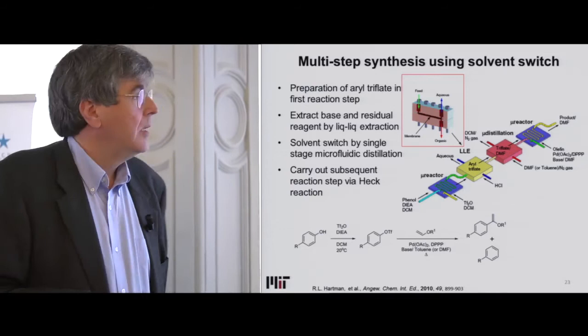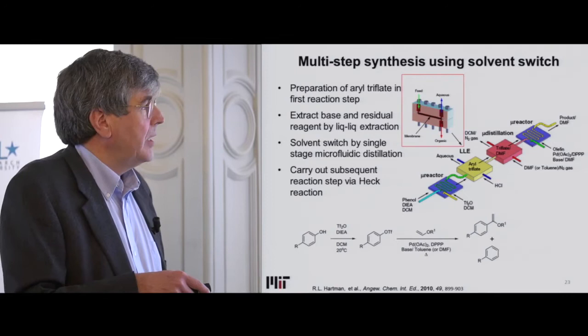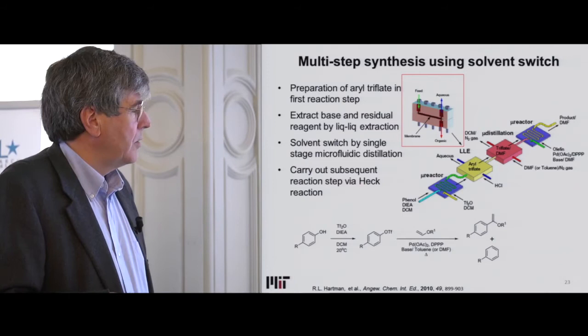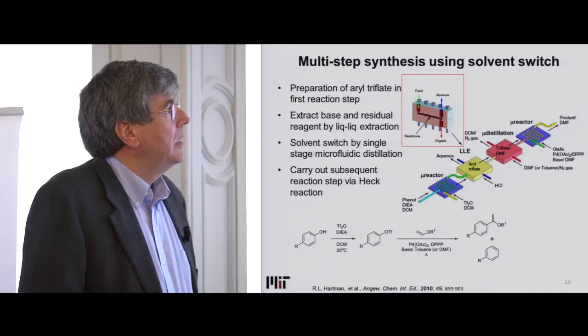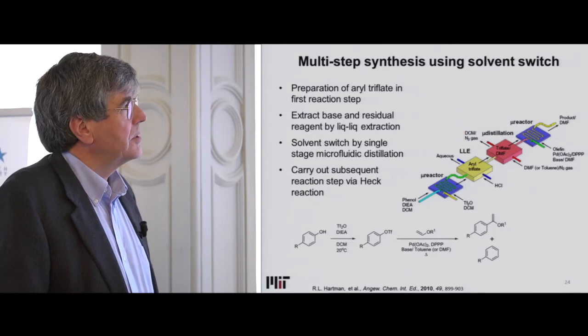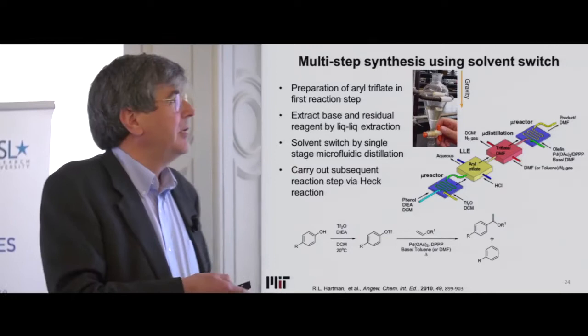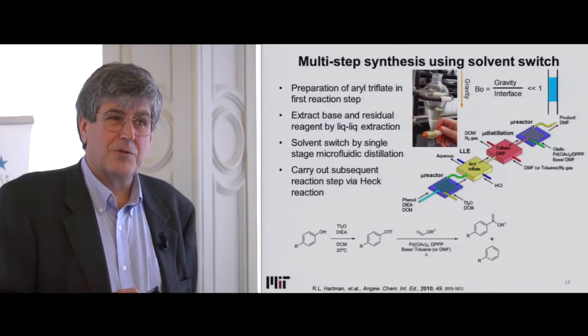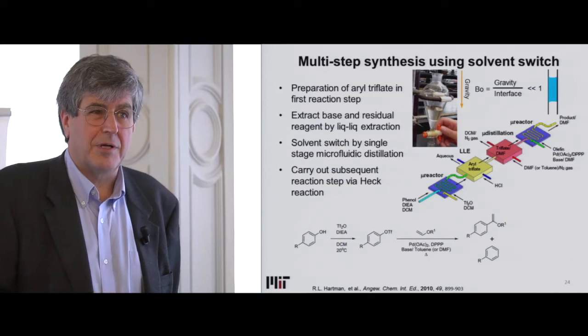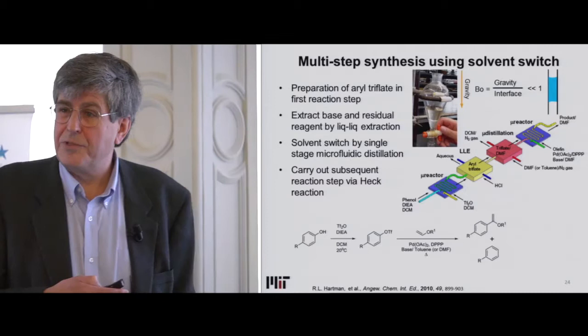The first step: we do the first reaction in the first micro-reactor. This has an amine and dichloromethane in it. I first want to get rid of the amine by washing with a weak acid to neutralize it and take the amine out. So I have to do an extraction process. The way you do this in the lab is you put it in a funnel, shake it, and let gravity settle it. But at microfluidic conditions, surface tension dominates — like a straw in your drink, you can't get it to separate because gravity doesn't drive the process; surface tension does. So why not just let the surface tension also drive the separation?